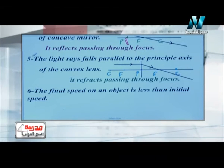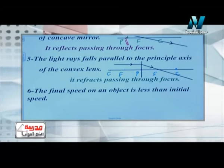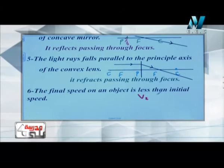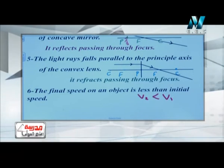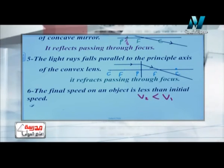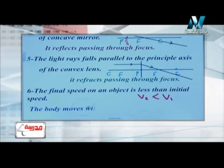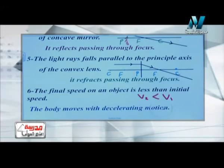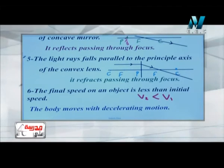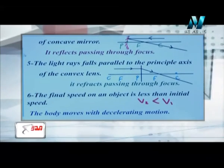The final speed of an object is less than its initial speed — V2 less than V1. In this case, the body moves with decelerating motion, like when we use the brakes in a car.